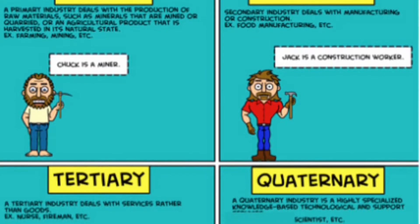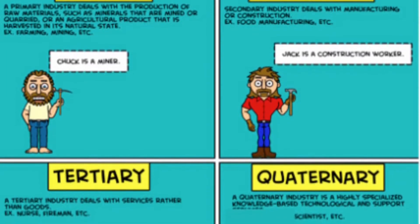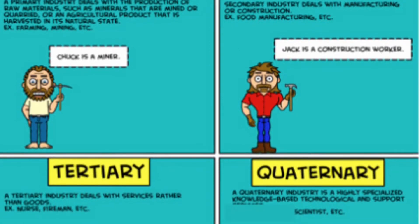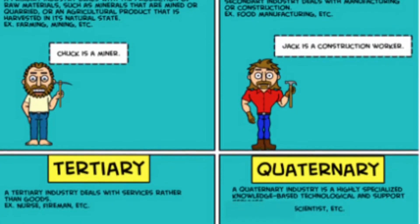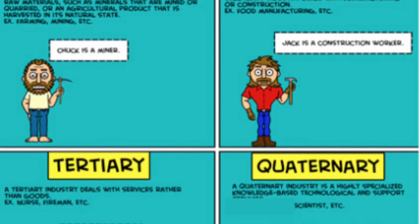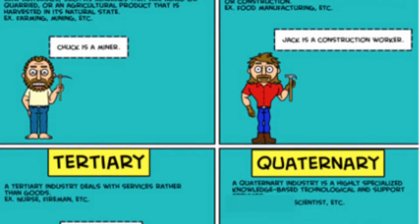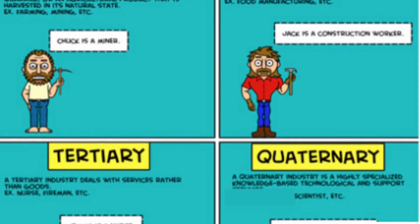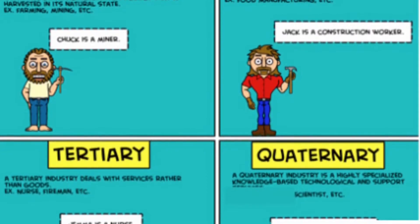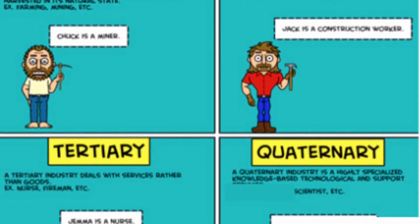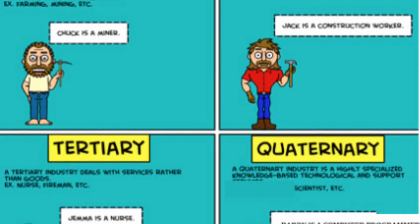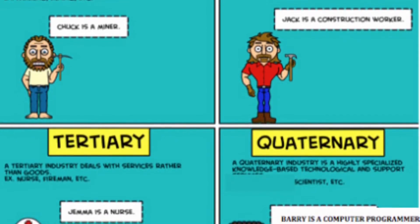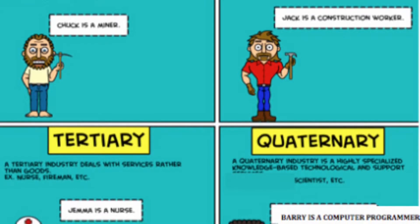First, we're going to look at economic activities — hopefully a review from your world geography class. There are four different types. Primary economic activities draw natural resources from the environment. These are jobs where people are physically working with their hands — manual labor type jobs — getting the resource straight from the ground. Generally these are low income, pre-industrial nations.